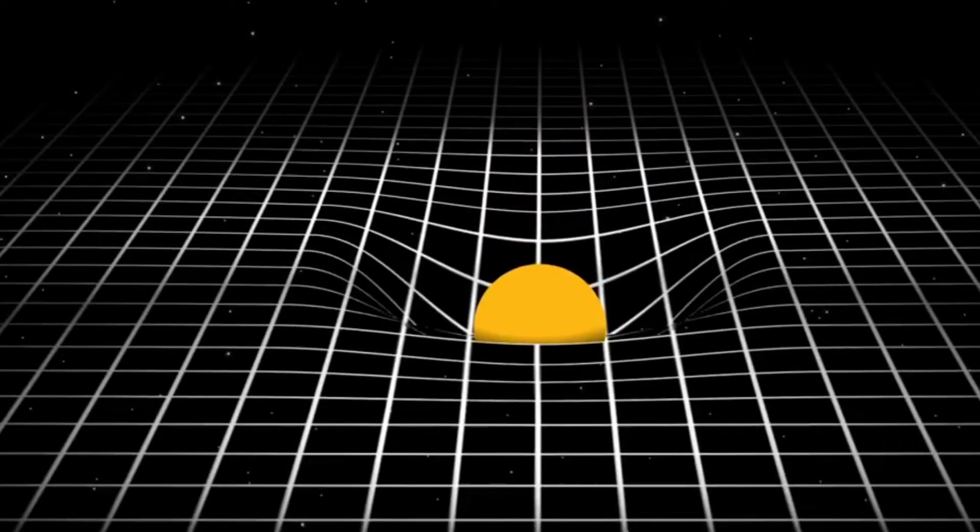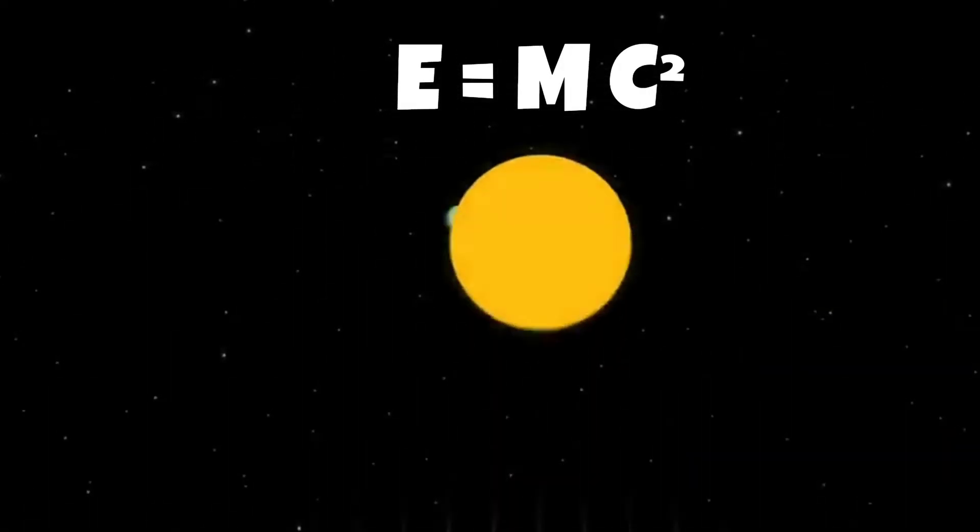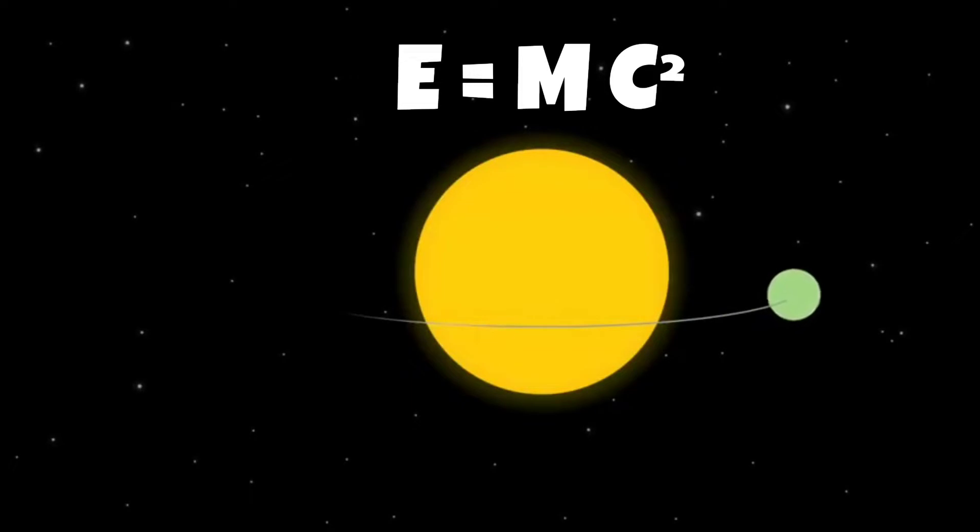One of the most well-known outcomes of this theory is the famous equation E equals mc squared, which demonstrates the equivalence of mass and energy.